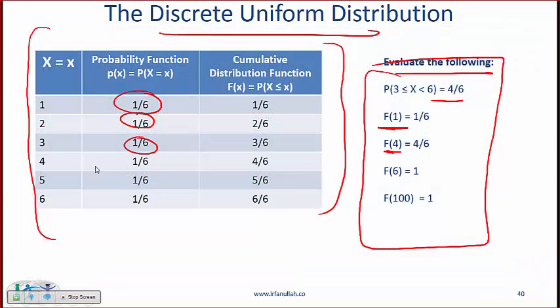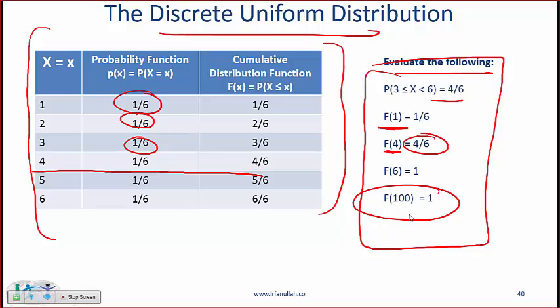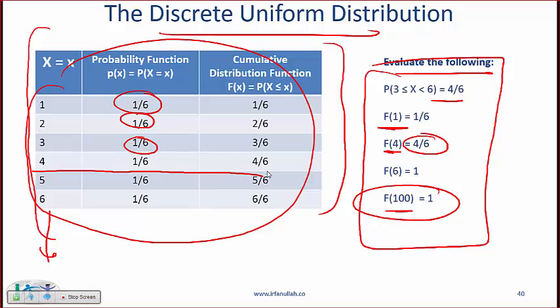F4 means up to and including 4 that's 4 over 6 and here is something that people keep messing up on. F100 means that you've gone way beyond so you've captured all this data and the probability is 1. The cumulative probability is 1.